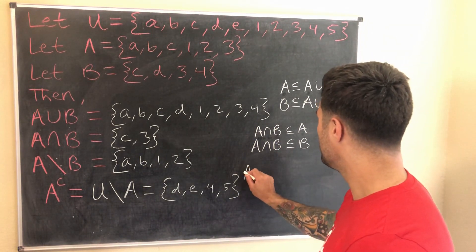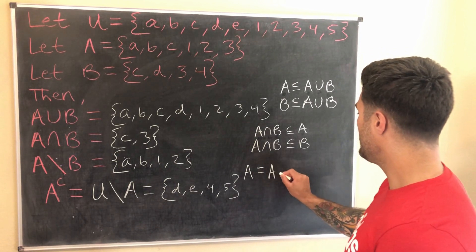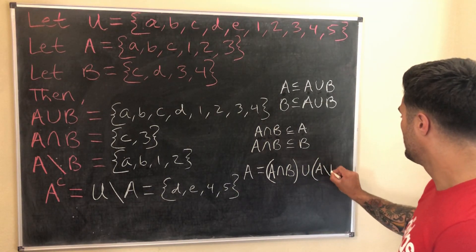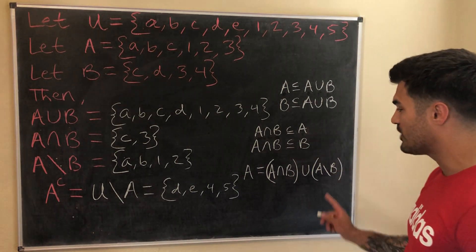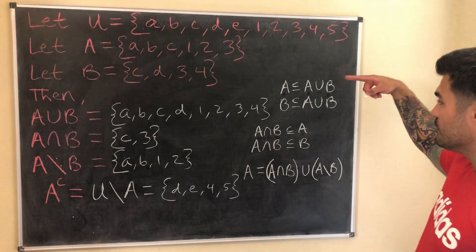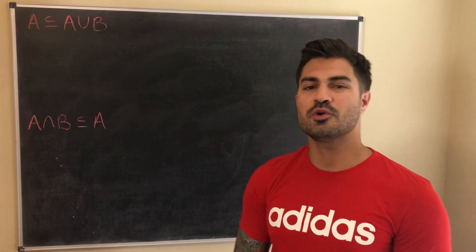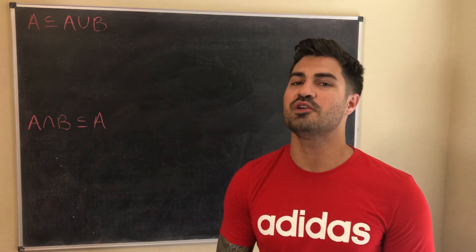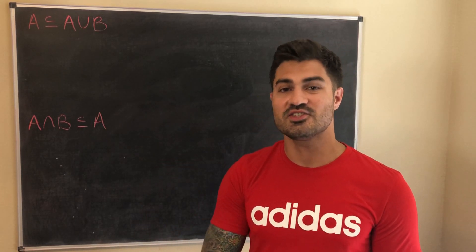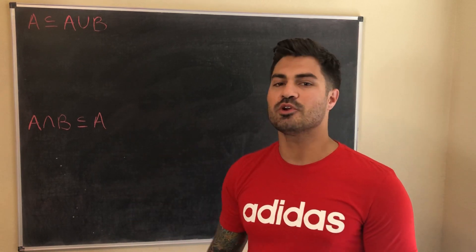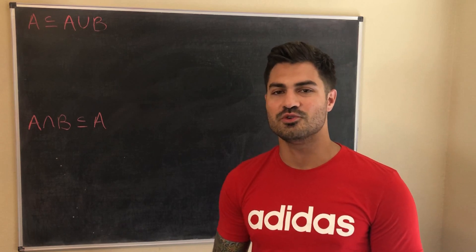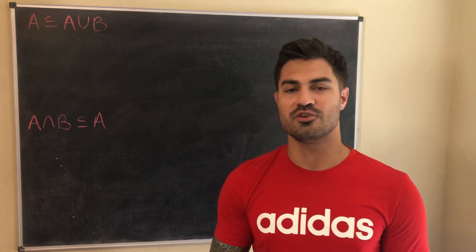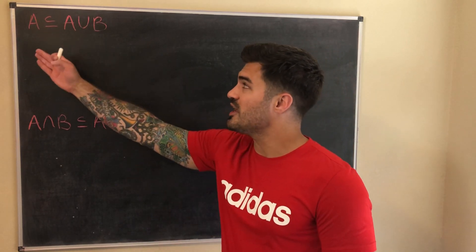This leads to a general claim: A always equals (A intersect B) union (A minus B). We'll prove this at the end of the video. It's a great example of how to prove two sets are equal. We'll also prove some of the subset statements. There are three proof examples: the first two are short and show how to prove a set is a subset of another, and the third proves this equality.